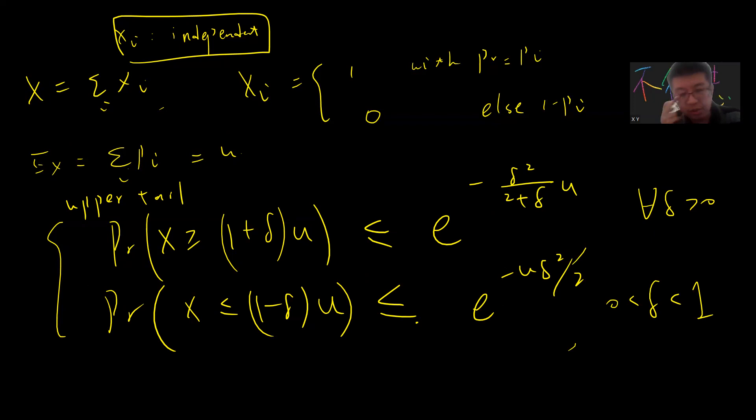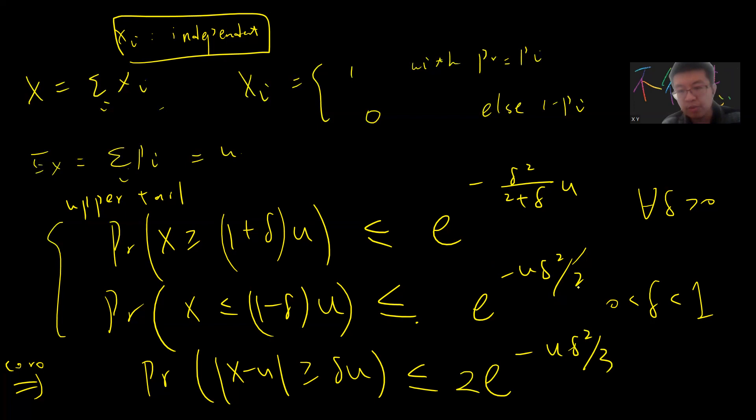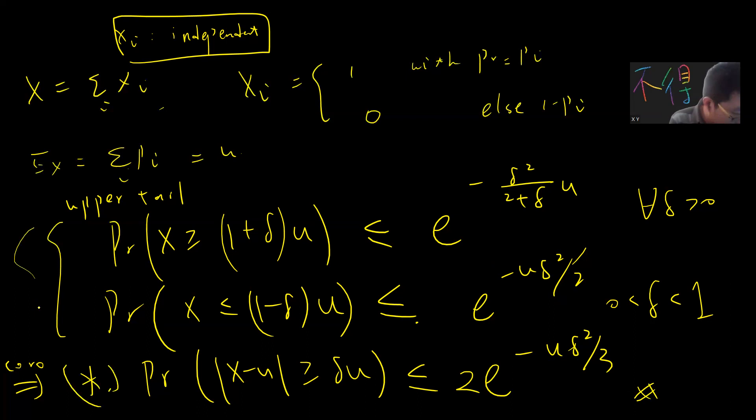There is also a corollary that is commonly used: the probability that the absolute value of the difference between X and μ exceeds δμ is bounded by exp(−μδ² / 3), times 2. The proof is simple — you just add the two tail bounds together and choose the appropriate bound. This corollary holds for δ in the range zero to one.